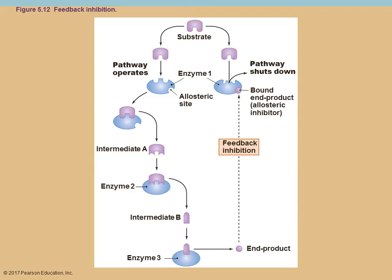Feedback inhibition is very commonly used to regulate this. In many metabolic reactions there's a multi-step process, and what happens is your final end product feeds back and binds — usually at the first step — and acts as an inhibitor to the enzyme necessary at that first step. So you start making product, and some of that product turns around and acts as an inhibitor to turn off the pathway. It kind of makes sense: we're getting enough product now, turn it off.